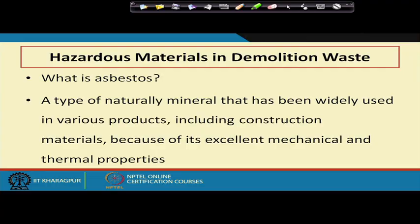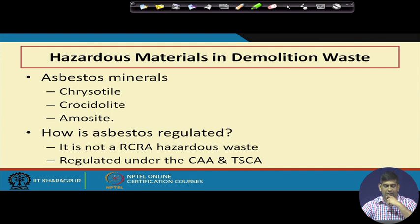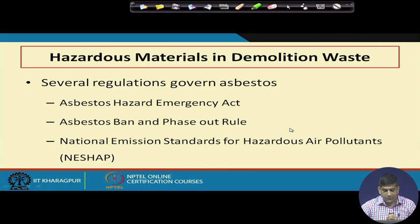Asbestos is a hazardous demolition material. It is a naturally occurring mineral widely used in construction because of its excellent mechanical and thermal properties. However, asbestos is considered hazardous because respiration of asbestos fibers results in serious illnesses including mesothelioma and lung cancer. In the US, it is regulated under the Clean Air Act and the Toxic Substances Control Act. Types of asbestos include chrysotile, crocidolite, and amosite.